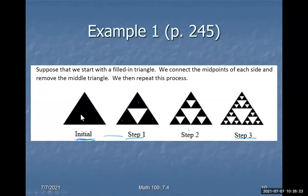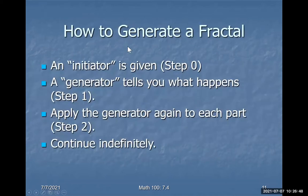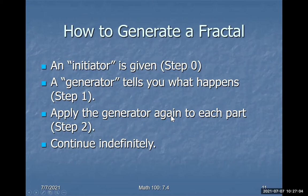Remove the middle inverted triangle from each remaining black triangle, and this is what you get. Keep doing this — after step three, you can see the iterative process clearly. What we have is an initiator, which is step zero — the shape you start from. Then we define a generator, which tells you what to do after step one. You repeat that process over and over again.